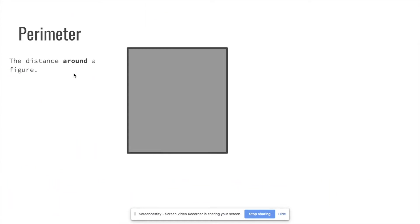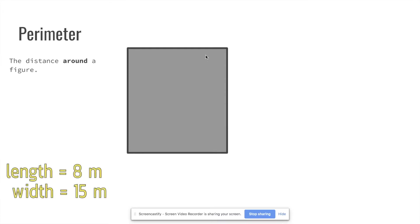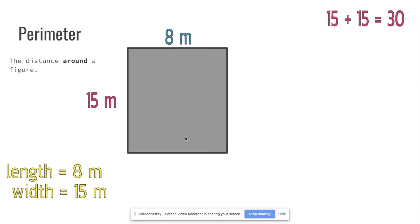This time we start with a rectangle already drawn. The length is eight meters and the width is 15 meters. Remember, we're not just adding 15 plus 8 — the rectangle has four sides. So we have 15, 8, 15, 8. Since 15 plus 15 equals 30 and 8 plus 8 equals 16, the total is 30 plus 16 equals 46 meters.